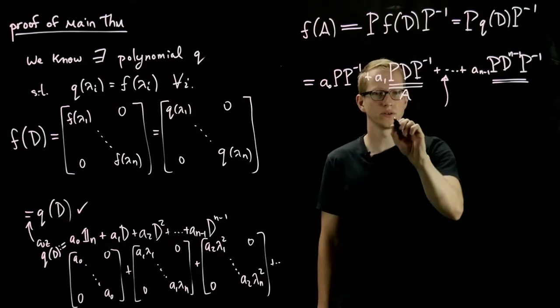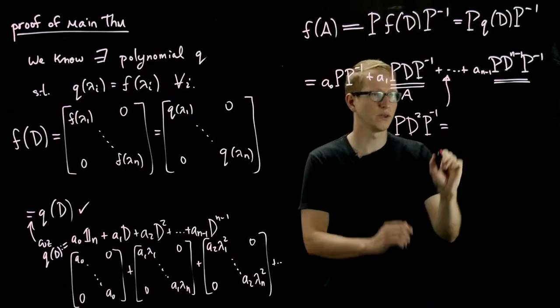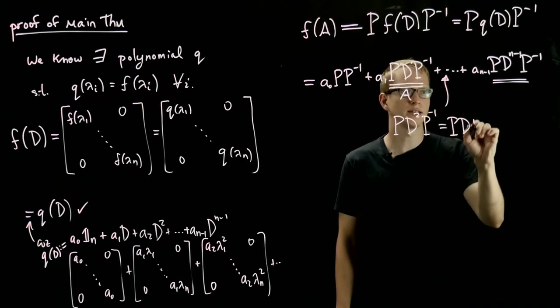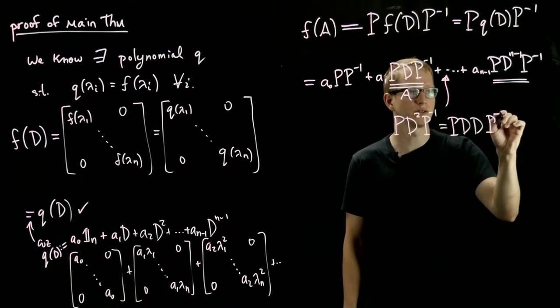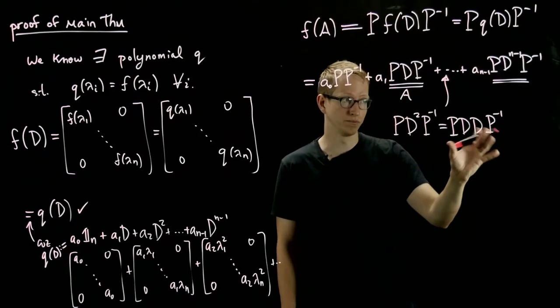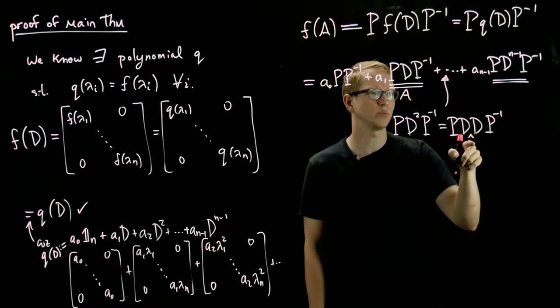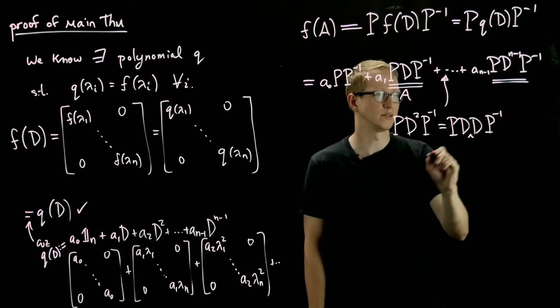P D squared P inverse. So P D squared P inverse also equals P times D times D times P inverse. And because P and P inverse are inverses of each other, we can plug in a P inverse P between these two D's.